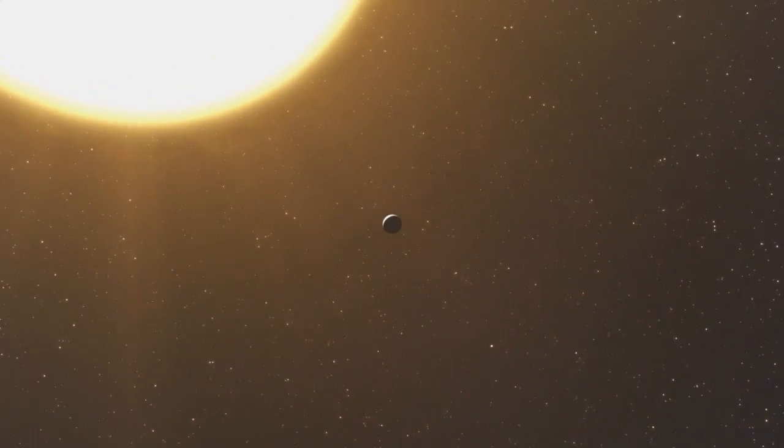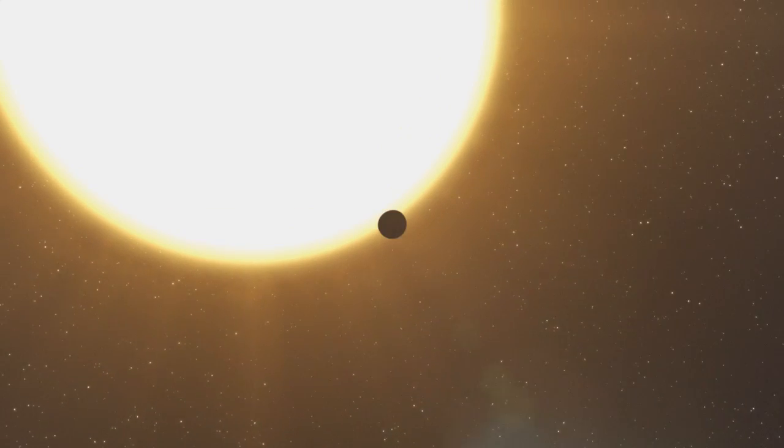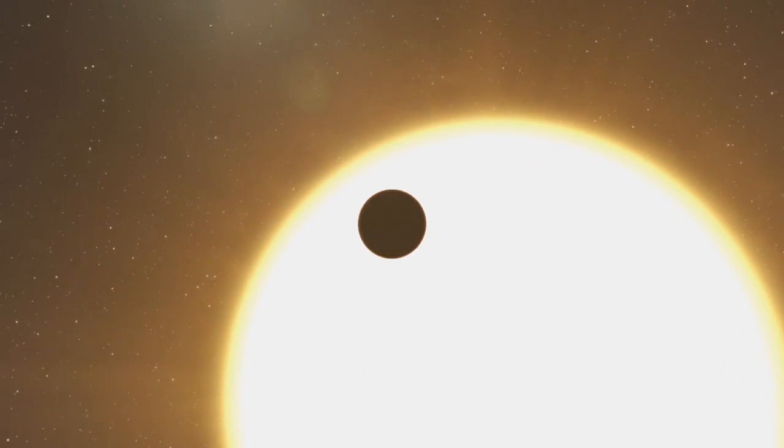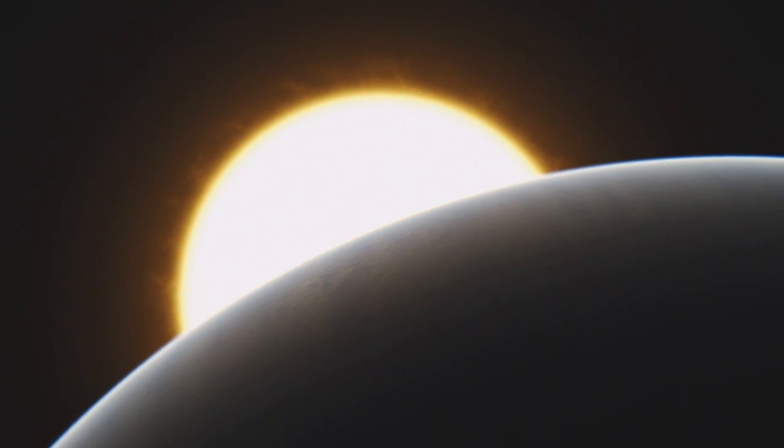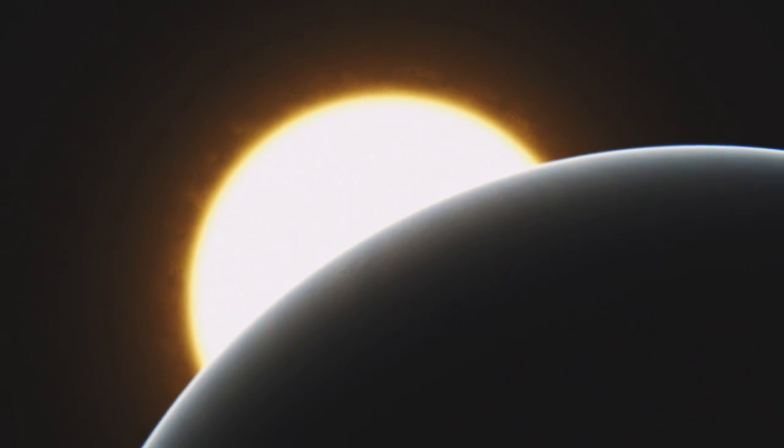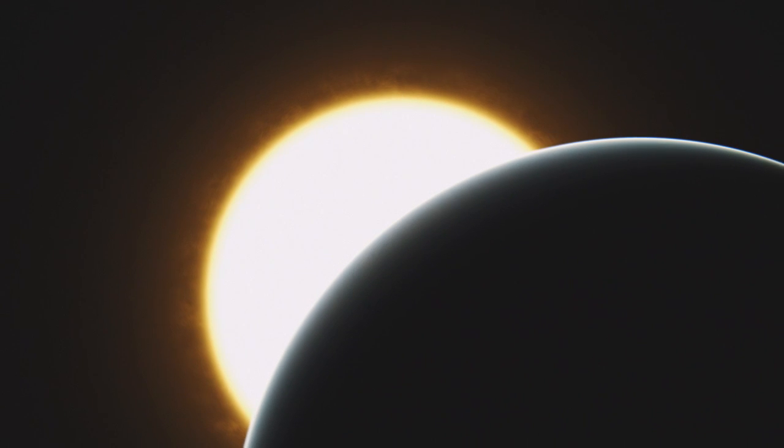The first two planets both have about one-third the mass of Jupiter, and orbit their host stars in seven and five days respectively. The third planet takes 122 days to orbit its host, and is more massive than Jupiter.